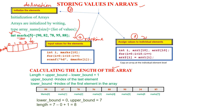Along with the declaration, initialization means you are going to give the values. The values will always be inside curly braces, separated by a comma. So marks[0] will be 90, marks[1] will be 82, marks[2] will be 78, then 95, 88, etc. This is one method in which you can store values in the array.